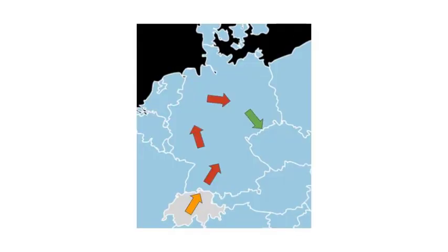Even more restrictive and less libertarian countries might even go one step further. They want to know the whereabouts of each individual at any given point in time. So after crossing the border, everybody will receive a tracking device to enable monitoring of every single movement. Not a nice vision, by the way.